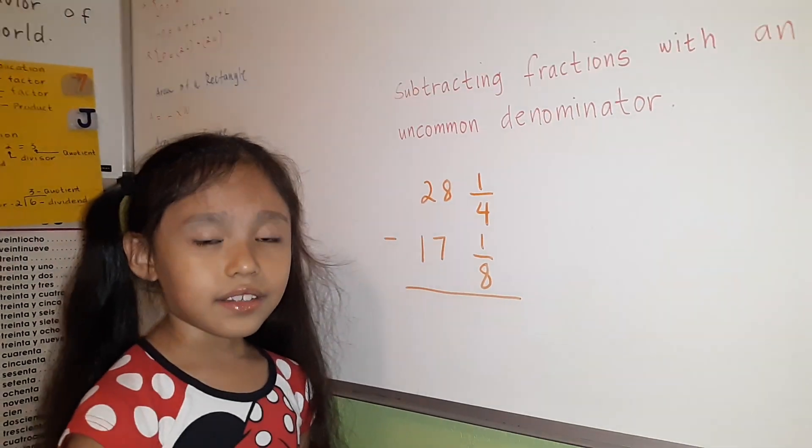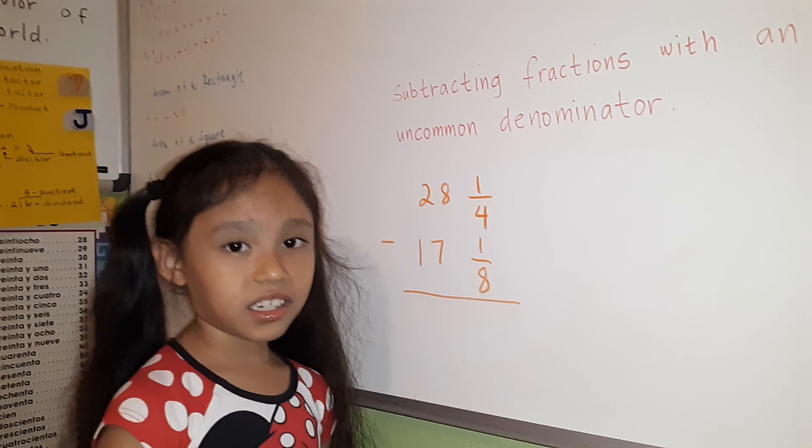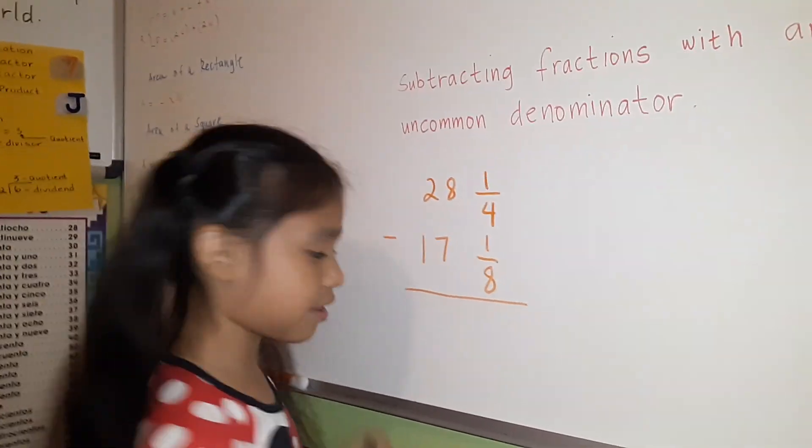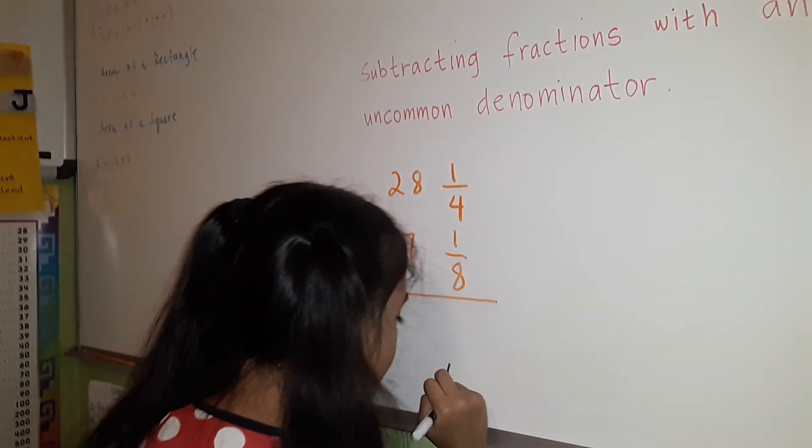Now we are going to find the common denominator of 4 and 8. To find the common denominator of 4 and 8, we're going to use the LCD.